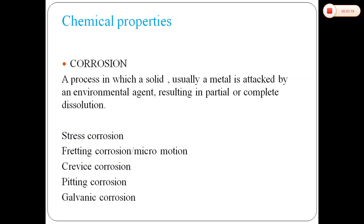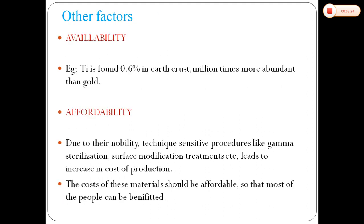Regarding chemical properties, corrosion has already been discussed earlier. Other factors include availability — for example, titanium is found at 0.6% in the earth's crust, making it a million times more abundant than gold. Affordability: due to the nobility of the technique, sensitive procedures like gamma sterilization and surface modification treatments lead to increased production costs. The cost of the material should be affordable so that most people can benefit.